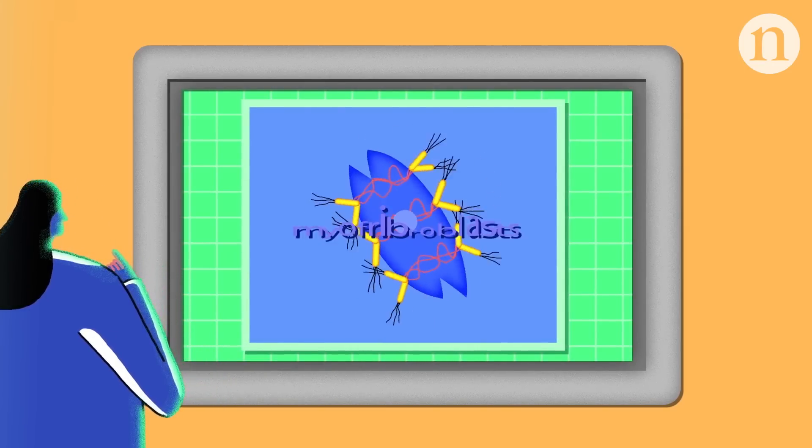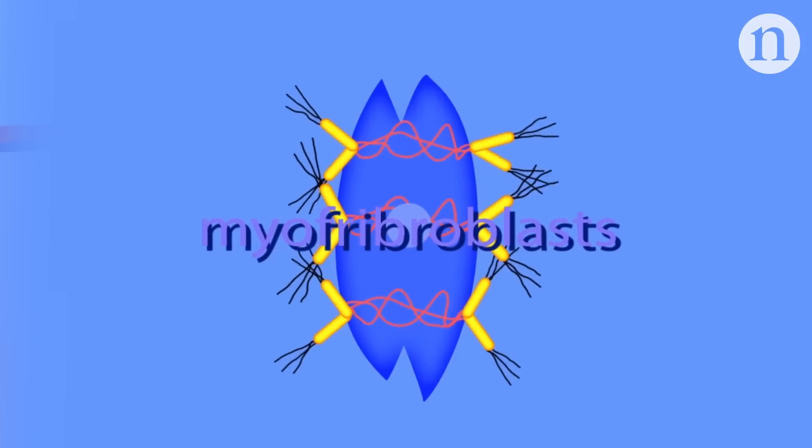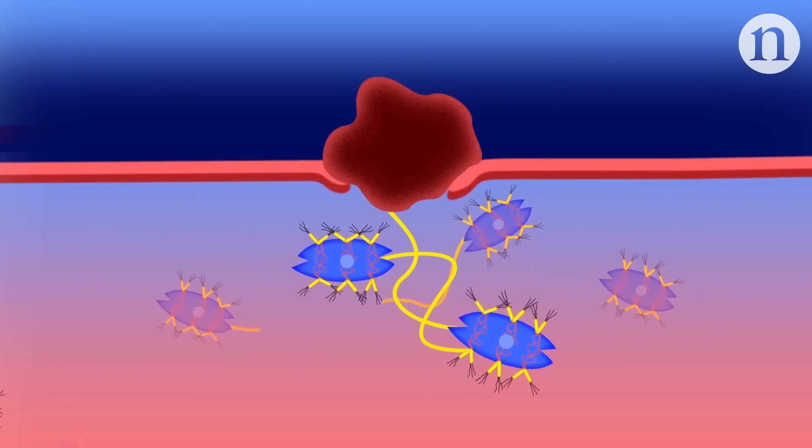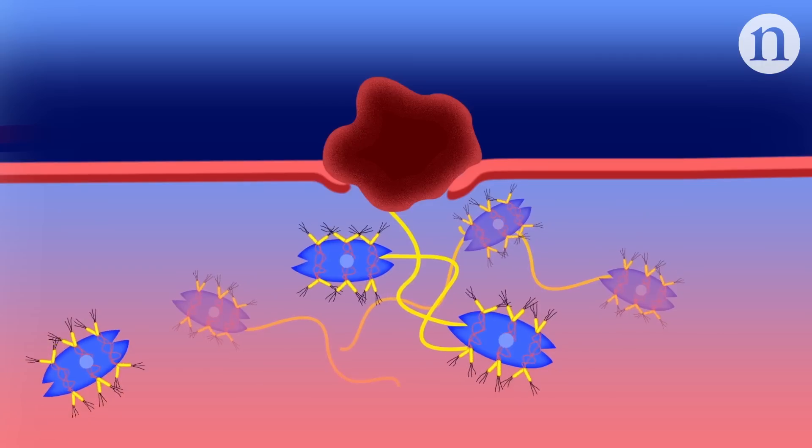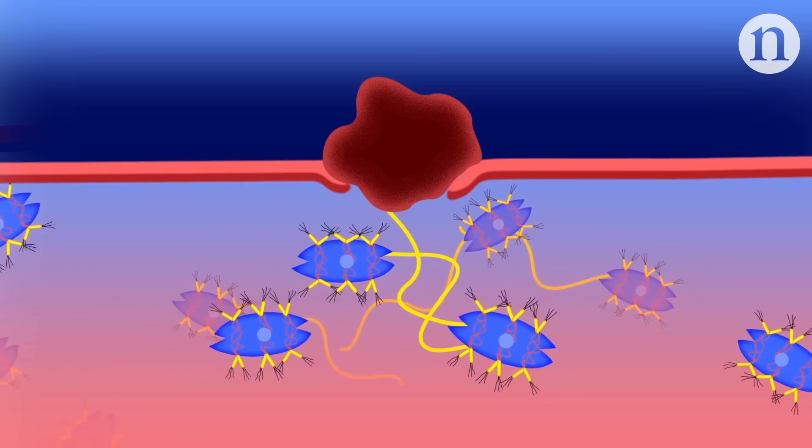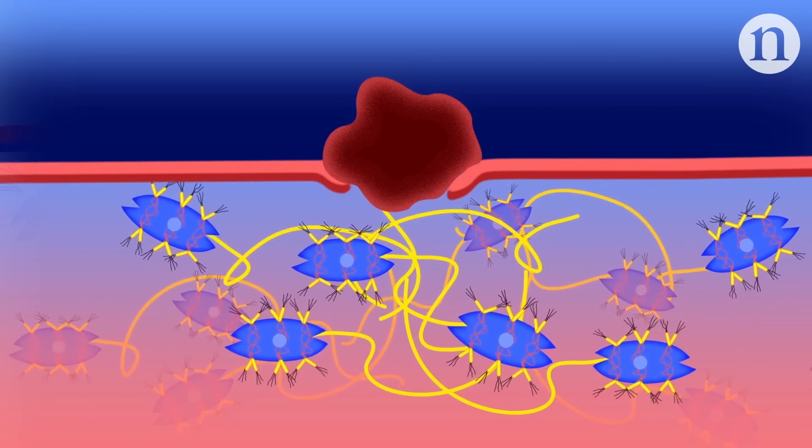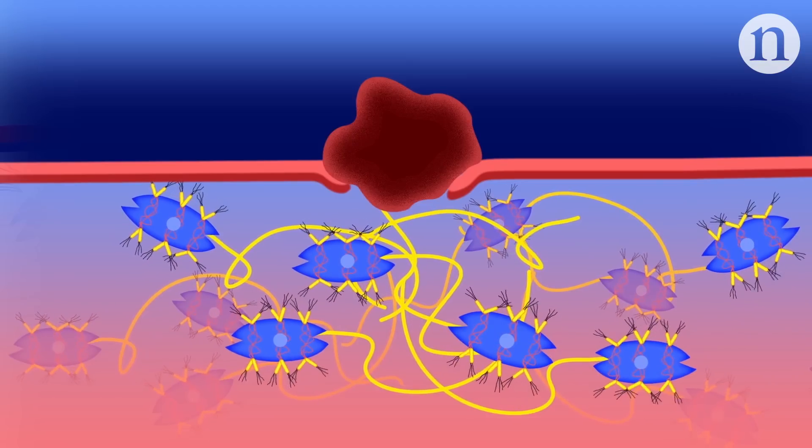Scars are generated by cells called myofibroblasts. When these cells become activated, they proliferate, migrate to injury sites, and secrete collagen into the extracellular matrix. As these collagen fibers accumulate, they become cross-linked into a mesh which stiffens the tissue and blocks its function.